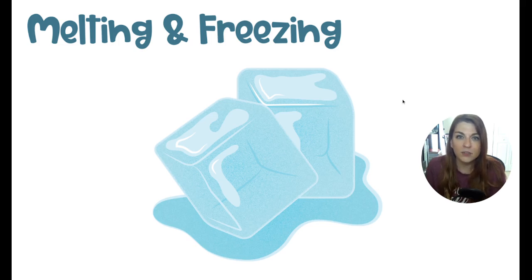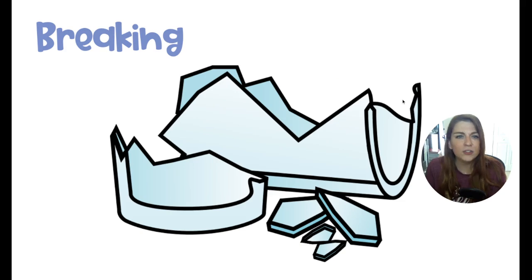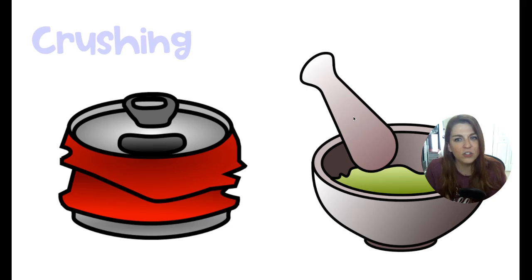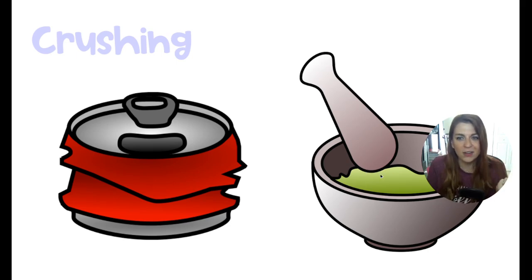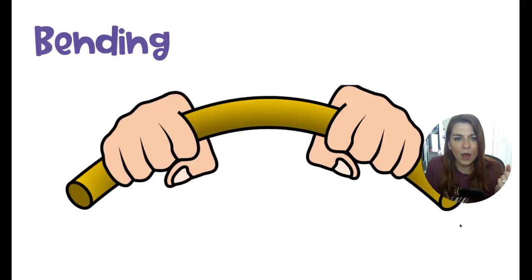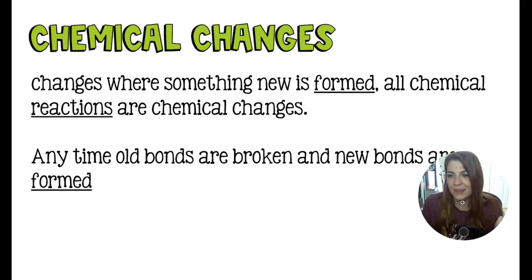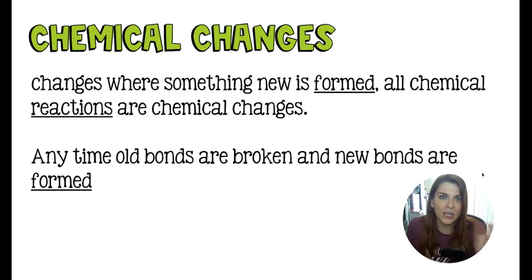Melting and freezing are prime examples of physical changes. So is breaking, smashing, cracking, boiling, crushing — if you took a can and crushed it, or took a really big crystal and crushed it into a dust, like crushing salt into something smaller. Bending is one, and anything that is just going to change the way it looks is going to be a physical change.